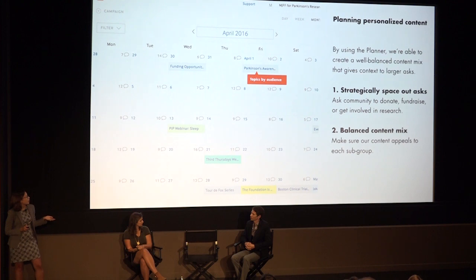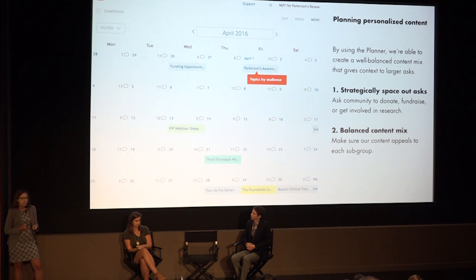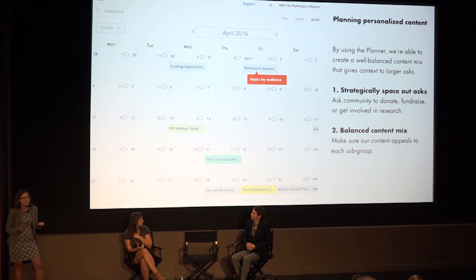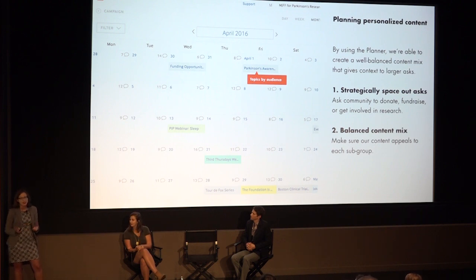This is an example of a Percolate calendar that we have and how we plan out all of our different promotions around webinars, events, and other upcoming content. We see that we're spacing out our content in a way that's engaging — we don't want to go on Facebook every day and say 'give us your money,' because people are not going to respond well to that. So Percolate allows us to really give context to those larger asks, whether it's donating, starting your own fundraiser, or getting involved in a clinical trial.